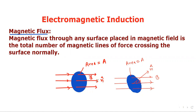Here, this is the surface and this is the direction of the magnetic field. The perpendicular drawn on the area is along the direction of B. Here, the perpendicular drawn on the area is n-cap, and the magnetic field is in another direction. So the angle between n-cap and B is theta. Magnetic flux is defined mathematically as φ = BA cos θ, where theta is the angle between n-cap and B.